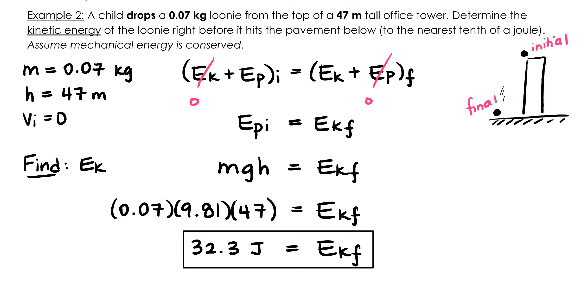This example is very similar to the one we just did because it also involves an object being dropped. A child drops a loonie from the top of an office tower. Drop tells us that the initial speed of that object is zero, which in turn means that the initial kinetic energy of that object is zero. We're also looking for the final kinetic energy in this example, which means that when we substitute into the equation for conservation of energy, we leave EK final as is. The final answer is 32.3 joules of kinetic energy.